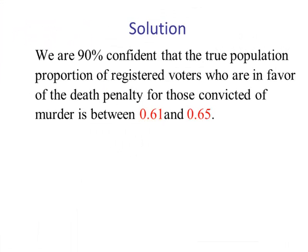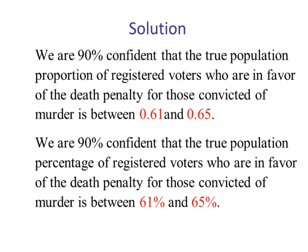To interpret our confidence interval, we would say we are 90% confident that the true population proportion of registered voters who are in favor of the death penalty for those convicted of murder is between 0.61 and 0.65. We could also say we are 90% confident that the true population percentage is between 61% and 65%.